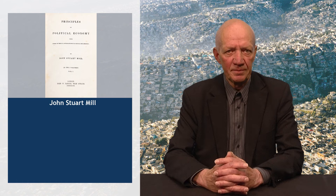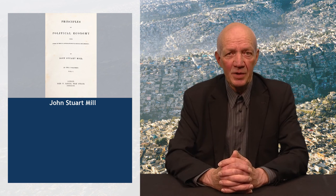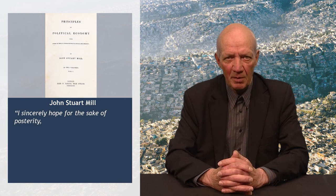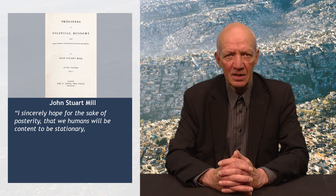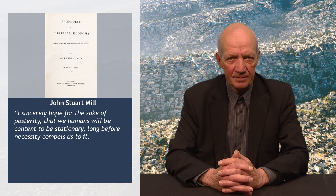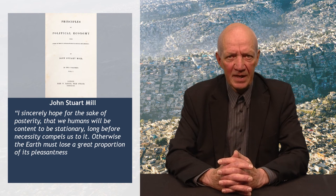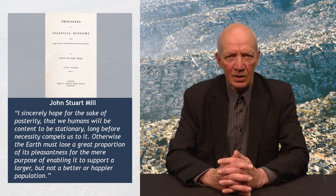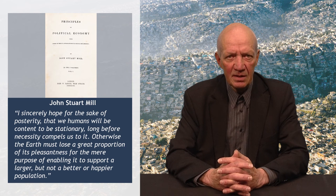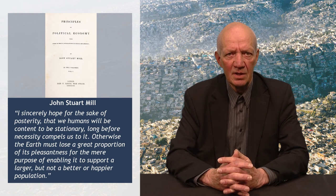In 1848, Mill wrote a book, Principles of Political Economy. In this book, he stated: 'I sincerely hope for the sake of posterity that we humans will be content to be stationary long before necessity compels us to it. Otherwise, the earth must lose a great proportion of its pleasantness for the mere purpose of enabling it to support a larger, but not a better or happier population.' He also thought that the stationary state would facilitate a moral growth, by which the existing type of social life — trampling, crushing, elbowing and treading on each other's heels — could be replaced.